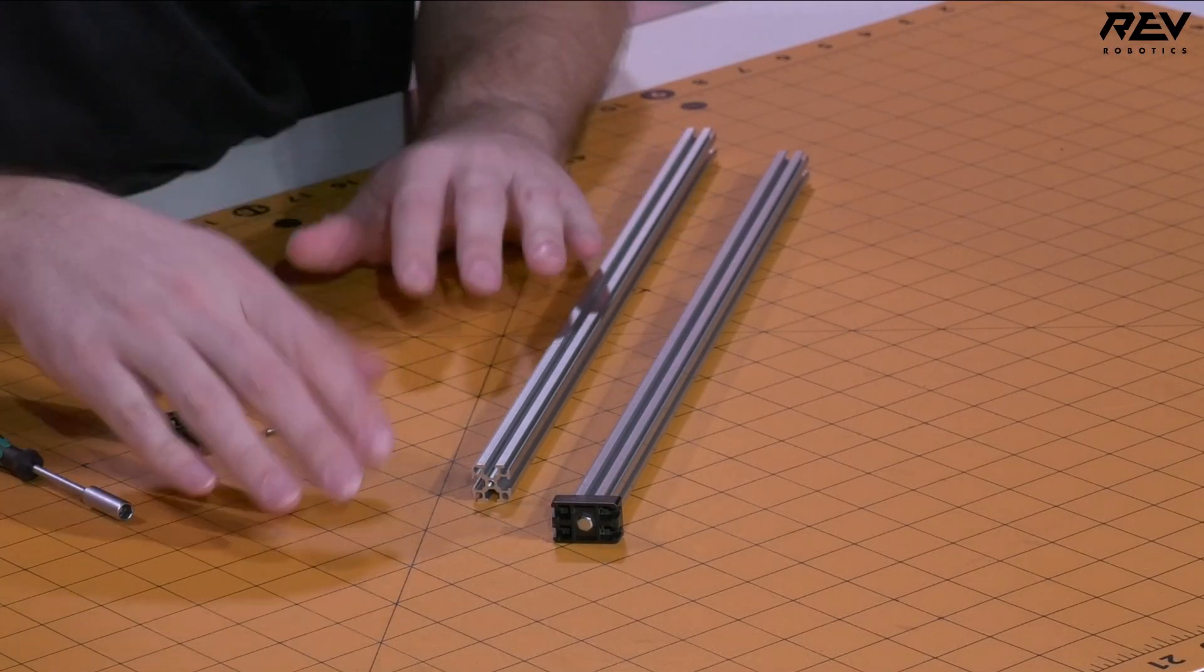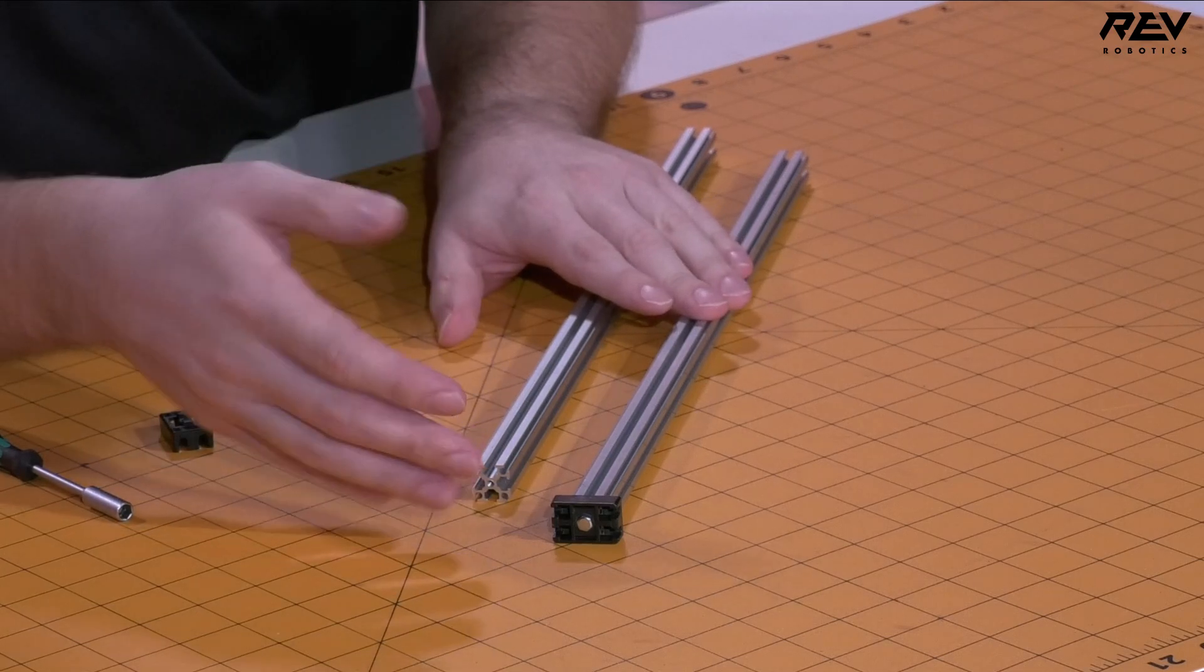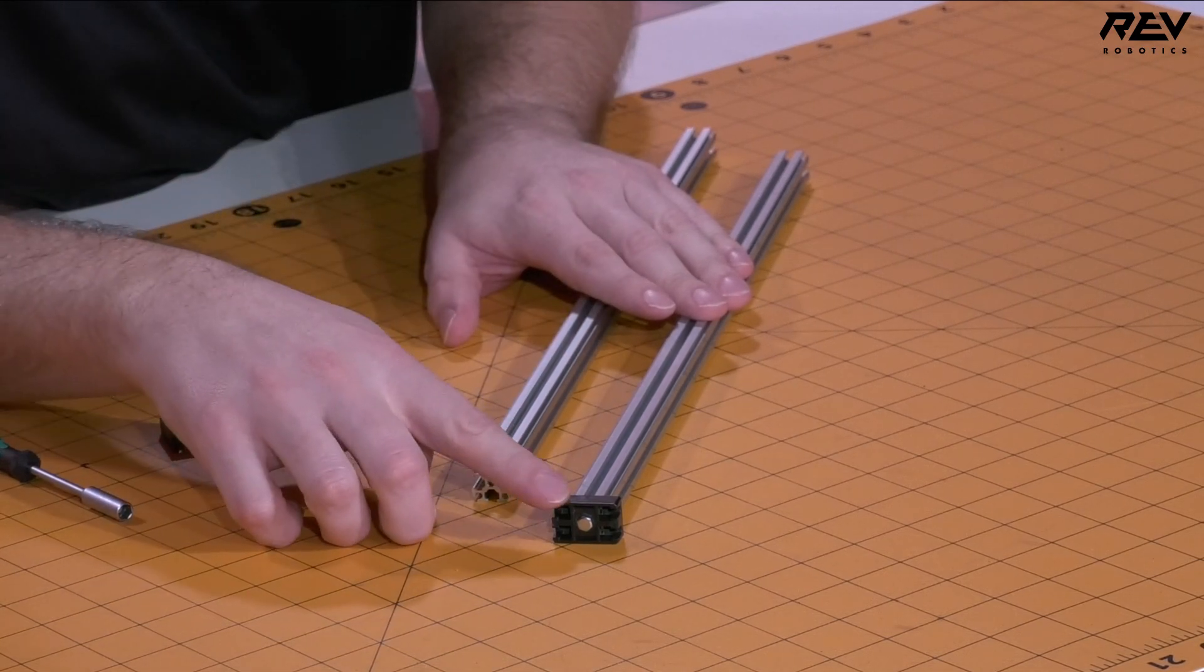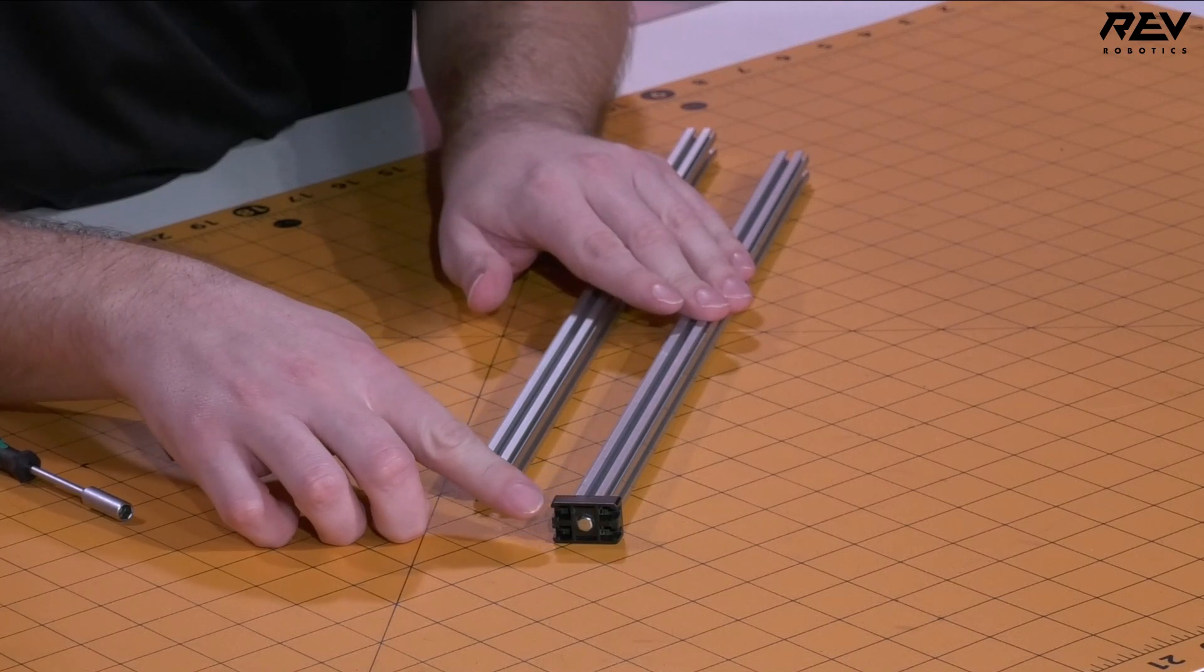So our first tip is with the assembly process. At the end of your assembly of your linear motion kit and typically with any of your lifts, you're going to need to put on one of these end caps.